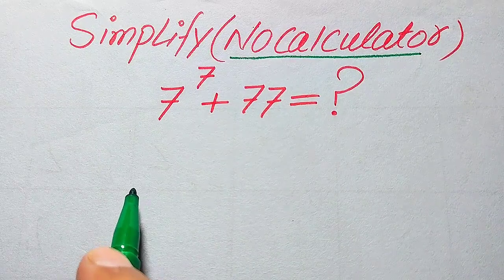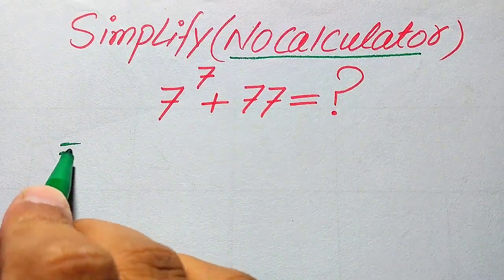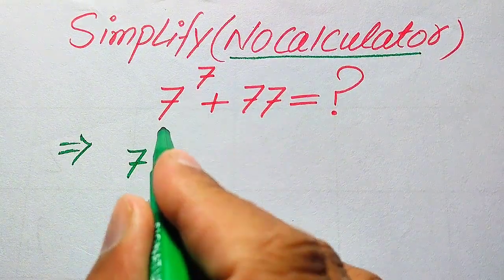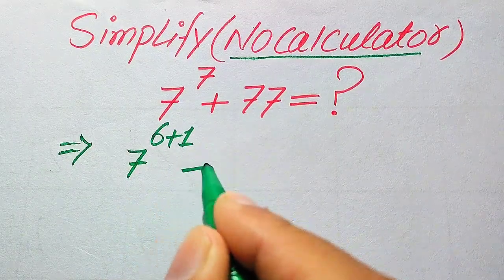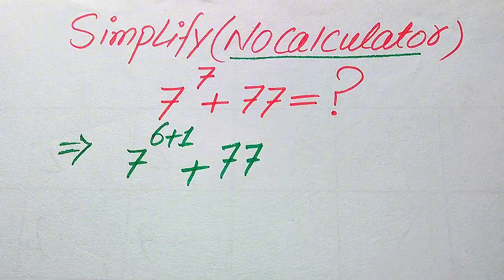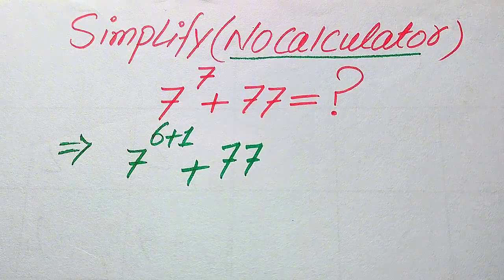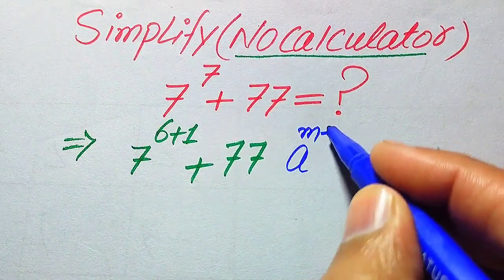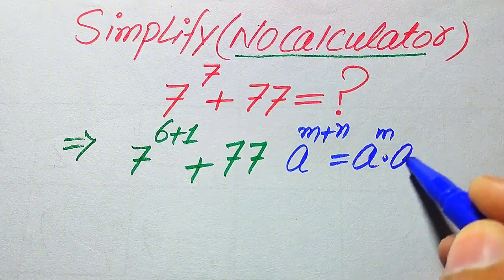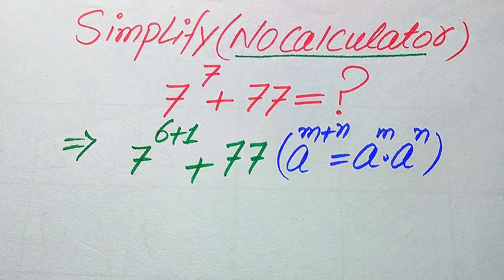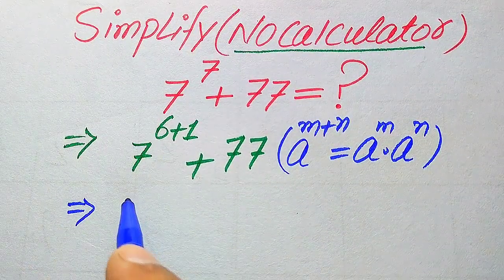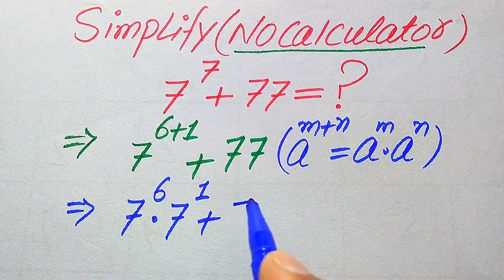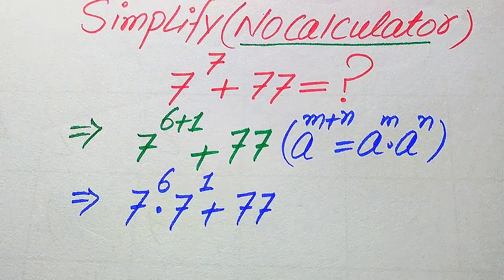Here I give you a step-by-step solution. The very first thing we do is focus on the exponent of this 7, which is also 7. So we break this 7 as 6 plus 1. We use the exponential law: a to the power of m plus n equals a to the power of m multiplied by a to the power of n. According to this rule, we break the exponent and write it as 7 to the power of 6 multiplied by 7 to the power of 1, plus 77.